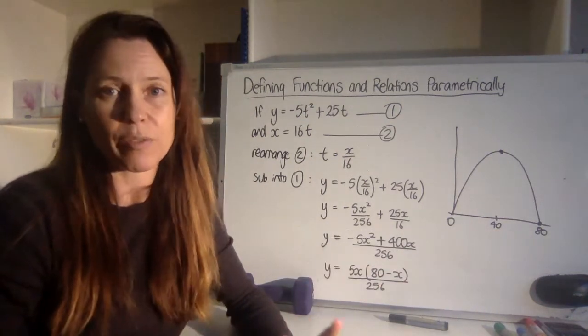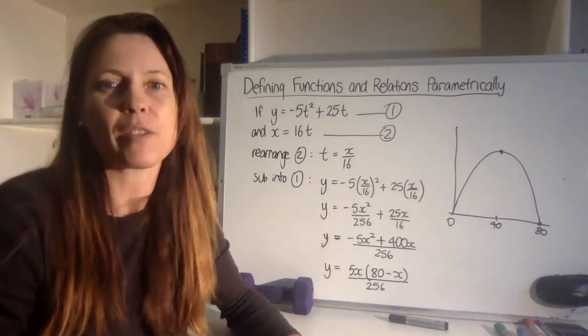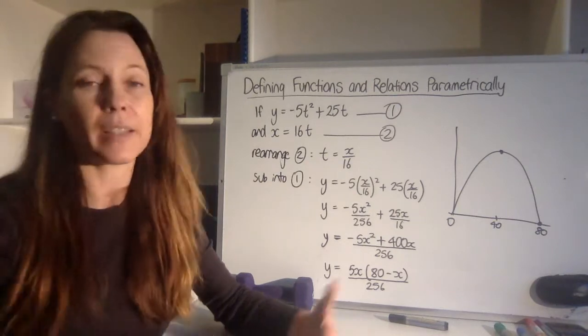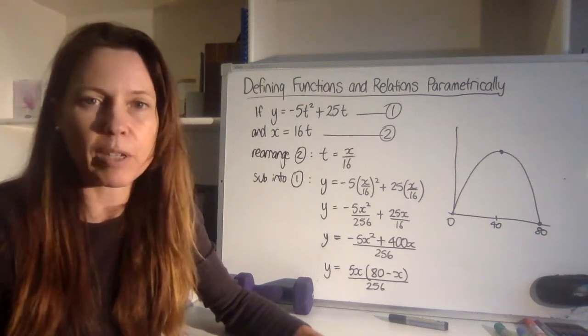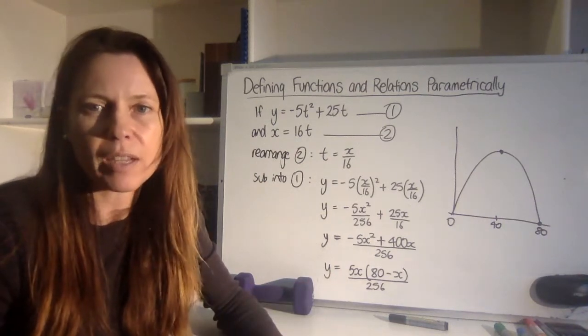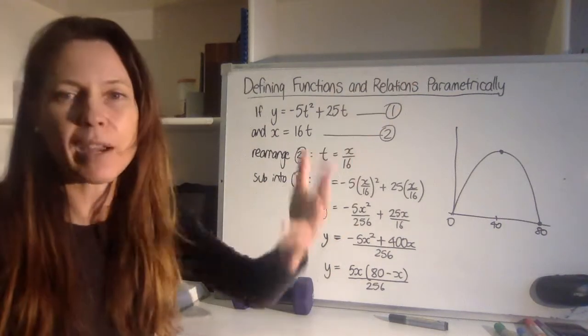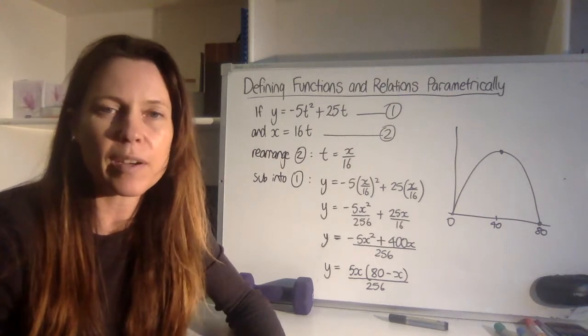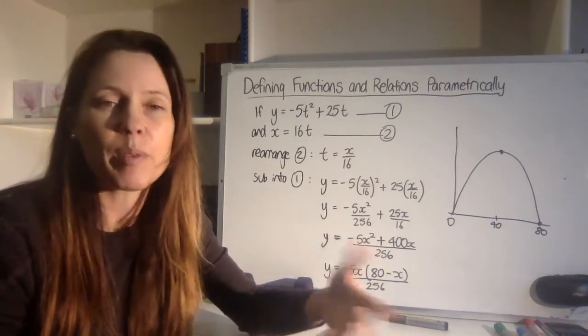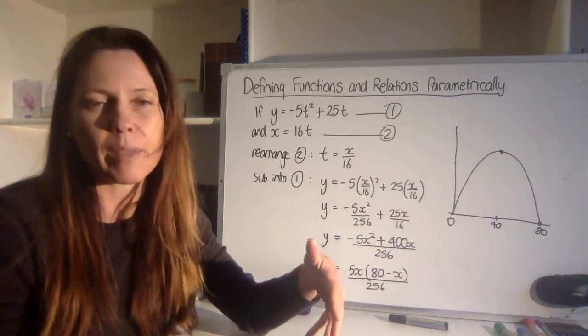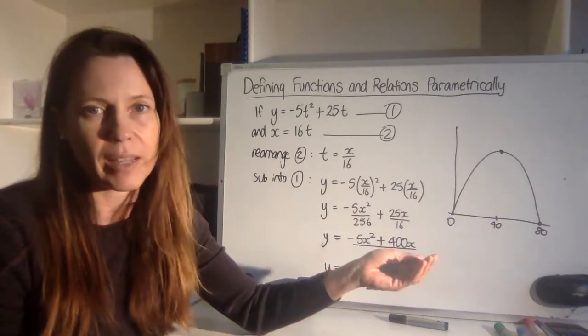Now, why would you want to define any function parametrically when you could just look at the Cartesian equivalent? Well, Cartesian equivalents seem straightforward because they've just got x and y in them. And it seems sort of clunky and odd to have a parametric pair of equations that's introducing a third variable. But the time that they're really helpful is when they can convey a little bit more meaning to what's causing something else. So they'll make more sense down the track.